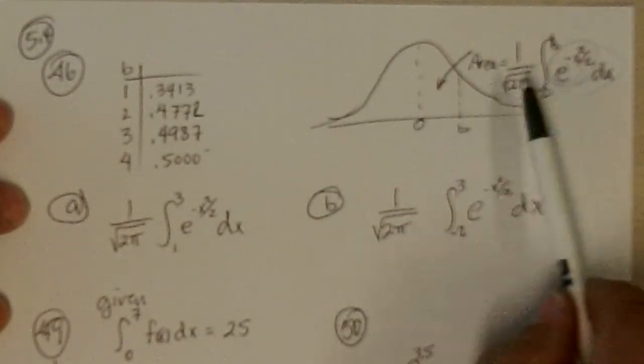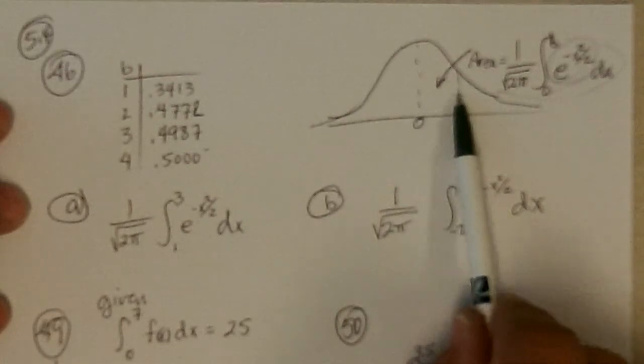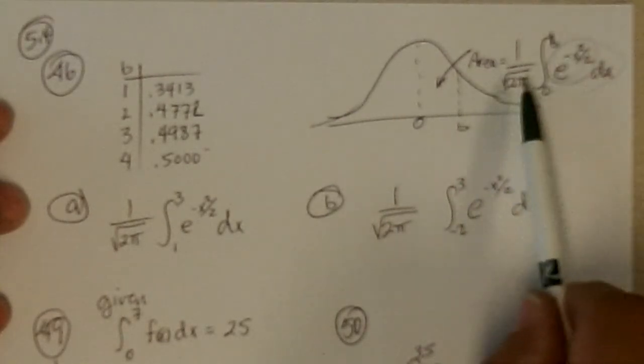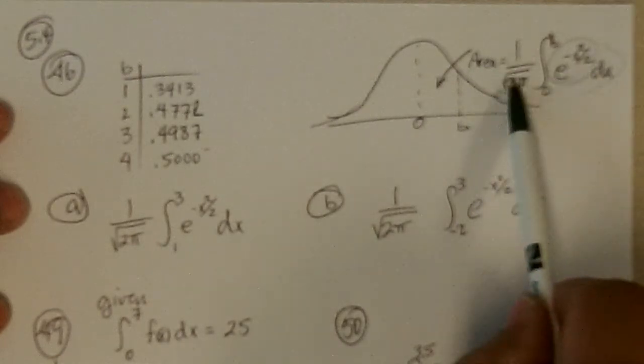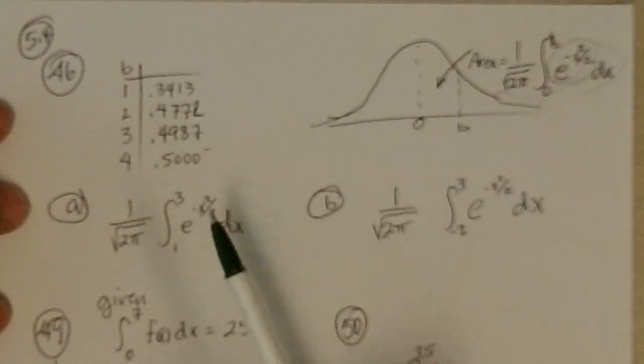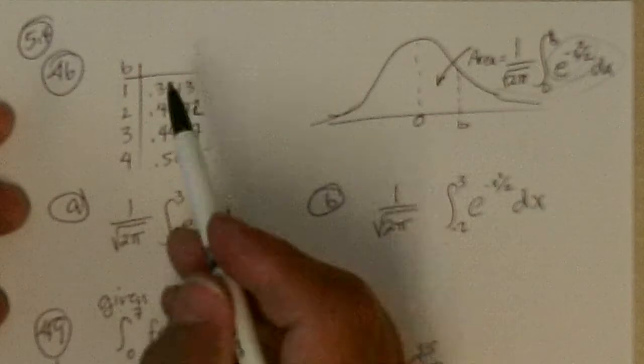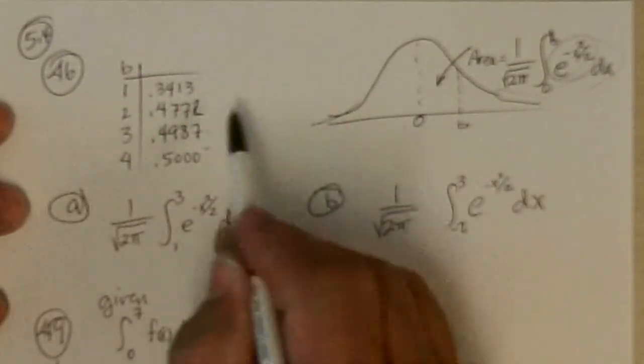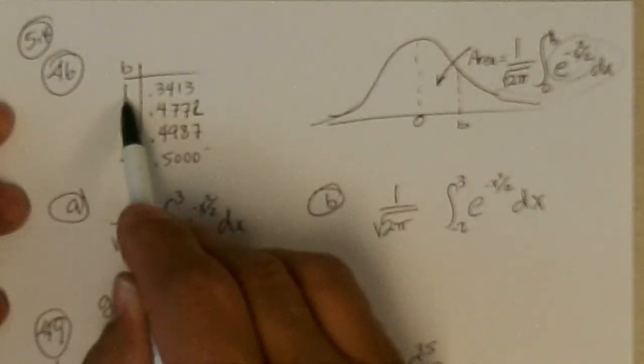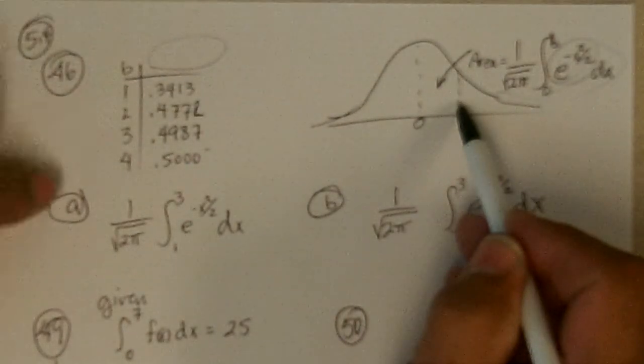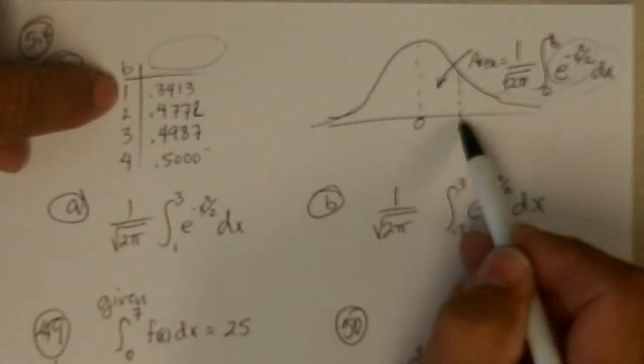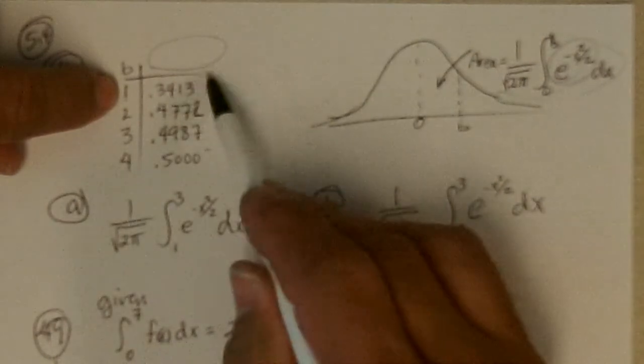So the area between here and b, from 0 to b, is this. You find the integral of that. Now this times this is the equation curve. Okay, so the table is saying they have that equation up there, that the area from here to here, from here to b, when b is 1, is that much area.